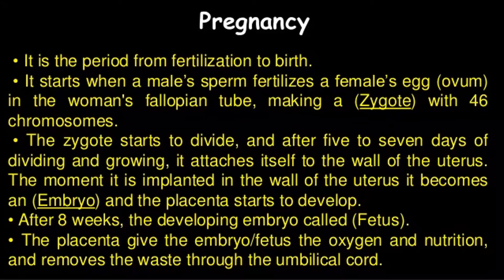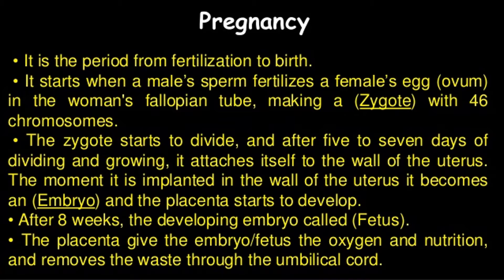Pregnancy is the period from fertilization to birth. It starts when a male sperm fertilizes a female egg — the ovum — in the woman's fallopian tube, making a zygote with 46 chromosomes. The zygote starts to divide, and after five to seven days of dividing and growing, it attaches itself to the wall of the uterus. The moment it is implanted in the wall of the uterus, it becomes an embryo and the placenta starts to develop.